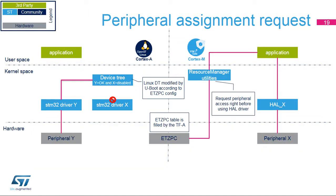This picture gives an overview of the software architecture related to the check of the peripheral assignment. In this example, the TFA firmware has isolated and assigned the peripheral X to the Cortex-M4 core and the peripheral Y to the Cortex-A7 core. On the Cortex-A7 core, during the boot stage, U-Boot has enabled the peripheral Y node and disabled the peripheral X node. As a consequence, only the STM32 driver for peripheral Y is enabled. On the Cortex-M4, the application grants the access right to peripheral X thanks to the Resource Manager utility and then calls the HAL API to initialize it.